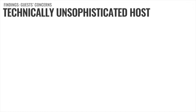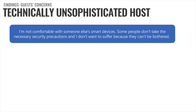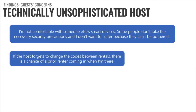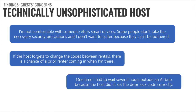The second concern was technically unsophisticated host. One participant wrote: 'I'm not comfortable with someone else's smart devices. Some people don't take the necessary precautions and I don't want to suffer because they can't be bothered.' There's also the aspect of the host not being tech savvy enough to take the necessary precautions. In the context of smart door locks, one participant wrote: 'If the host forgets to change the codes between rentals, there's a chance of a prior renter coming in when I'm there.' Another had a bad experience: 'One time I had to wait several hours outside an Airbnb because the host didn't set the door lock code correctly.'